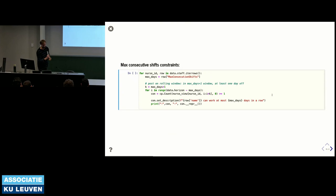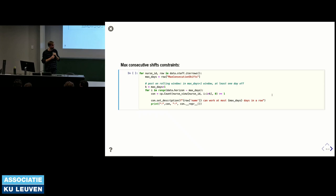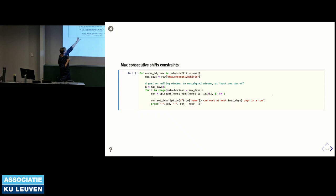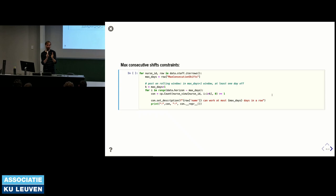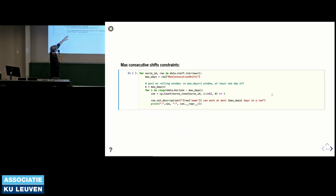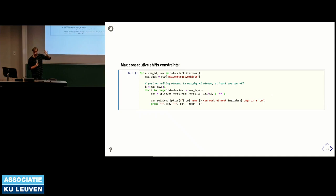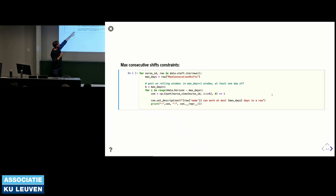A more involved constraint is maximum consecutive shifts. For every nurse we know their maximum consecutive shifts. We post this as: for every time window that has one day more than the max consecutive days, at least one of those days the nurse must be free. We count within that window how many times the nurse is free and require that count to be at least one. Again we have both the symbolic specification for the solver and the human-oriented description.